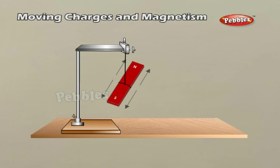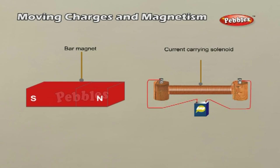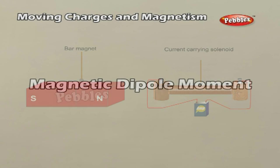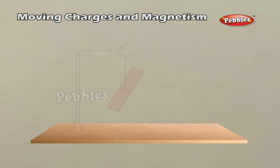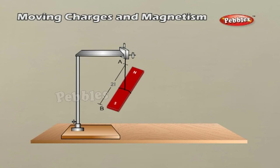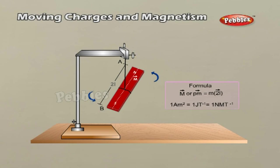The magnetic dipole is defined as a system of two equal and opposite poles separated by a small distance. The figure shows a magnetic dipole AB having north and south poles, each of strength M, separated by a small distance 2L. The distance between the two poles, 2L, is called the magnetic length. A bar magnet and current-carrying solenoid are examples of a magnetic dipole. The magnetic dipole moment is defined as the product of pole strength and the separation between the two poles, denoted by vector M or vector PM. Its SI unit is ampere·metre² or joule per tesla or newton·metre per tesla.